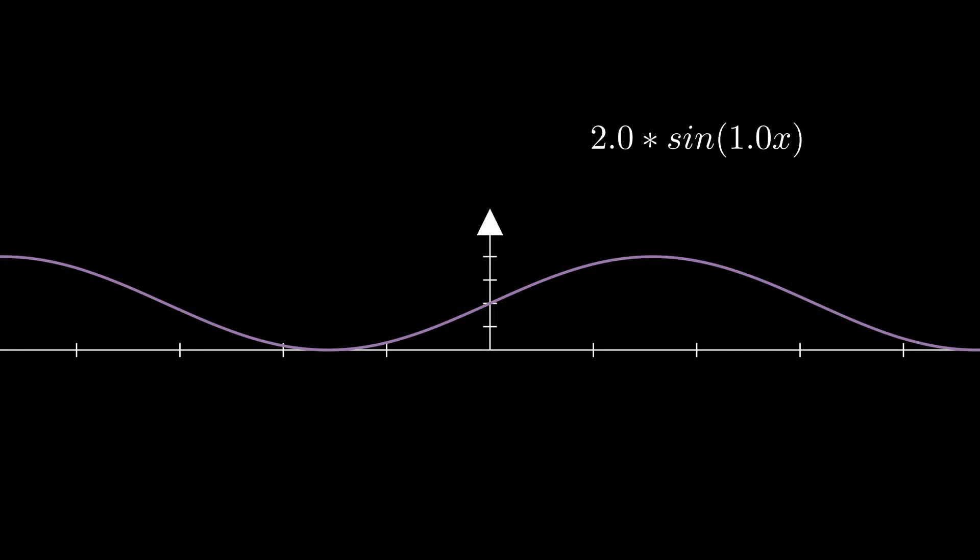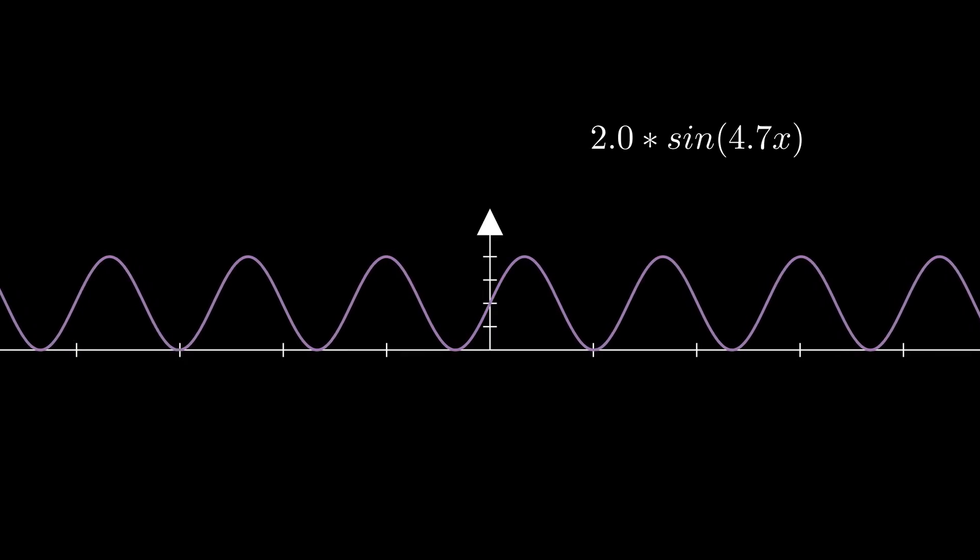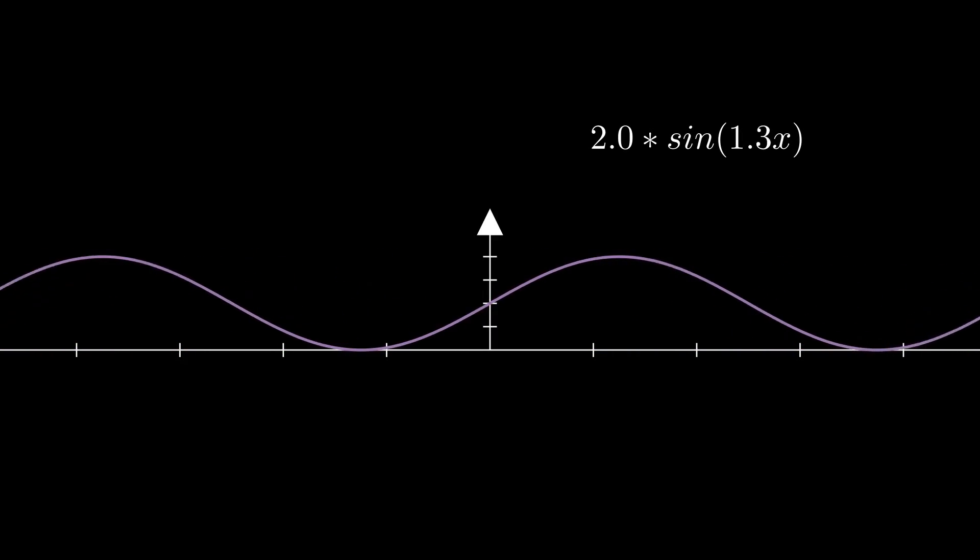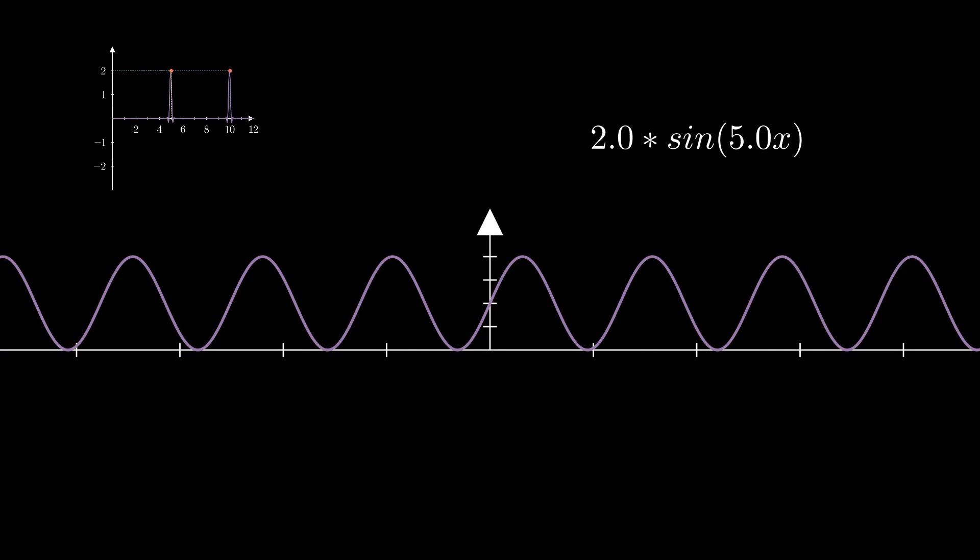Now notice what happens when you change the inside number. Making the inside number higher squishes it while making it lower makes it wider. Now remember from the Fourier transform graph how the spike happened when the input dot was at 5. So we are going to change our inside number to be 5.